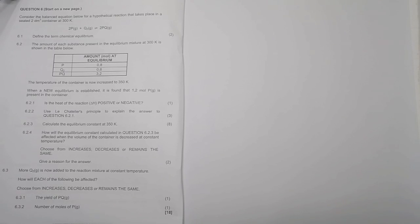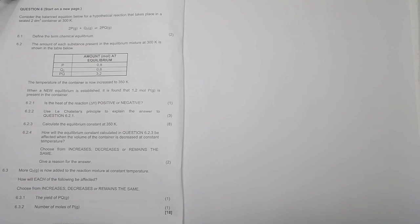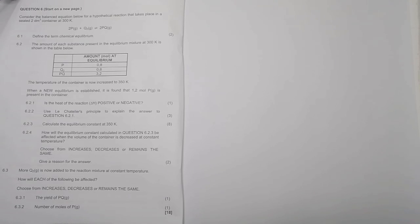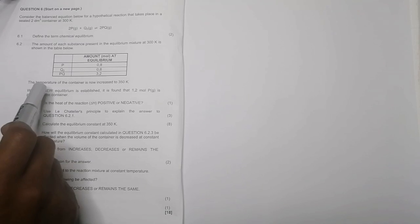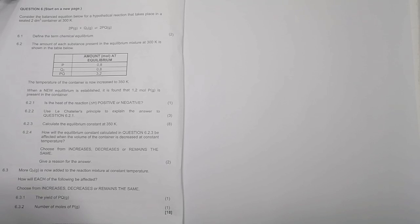6.2, they give us the amount of substance that is present in equilibrium. It's shown in the table. There we've got the amount of P, and remember that's in moles. And they give us also the temperature is now increased to 350. When a new equilibrium is established, it's found that we've got 1.2 moles of P which is in the container. So the question is, is the heat of the reaction delta H positive or negative?